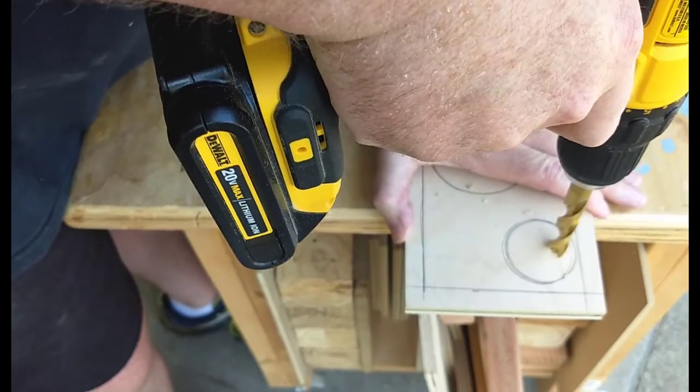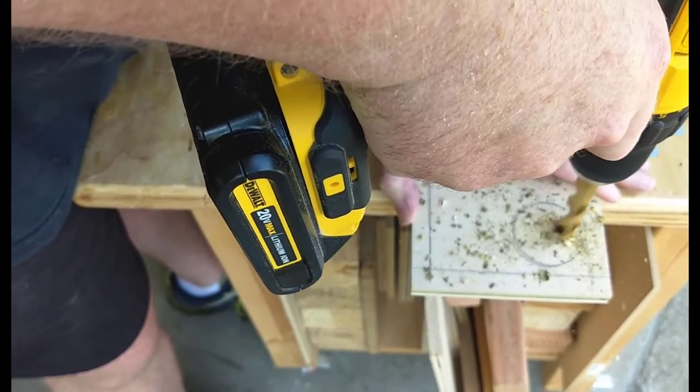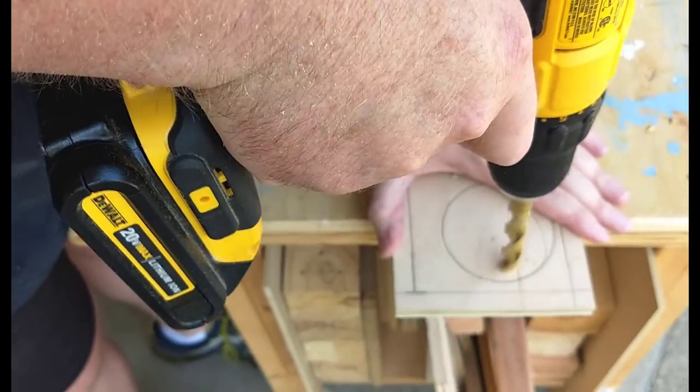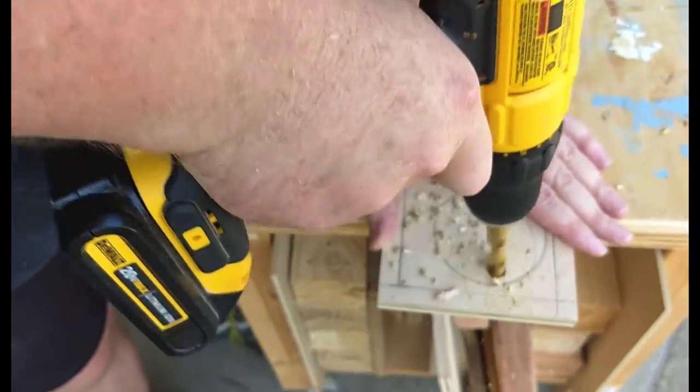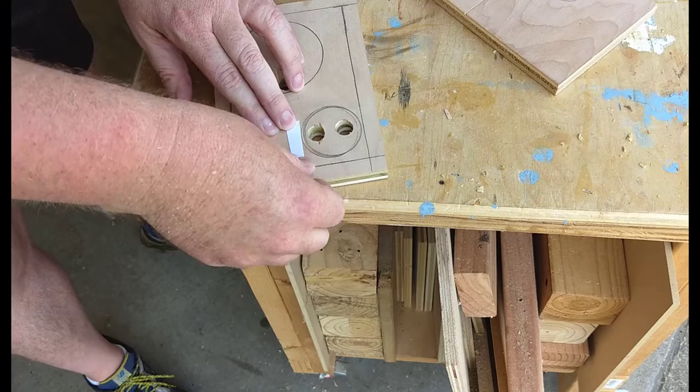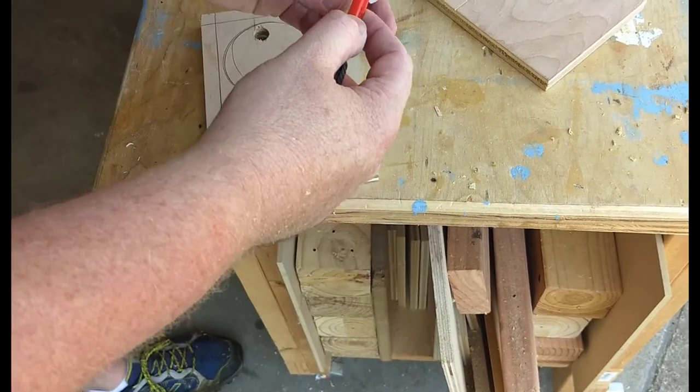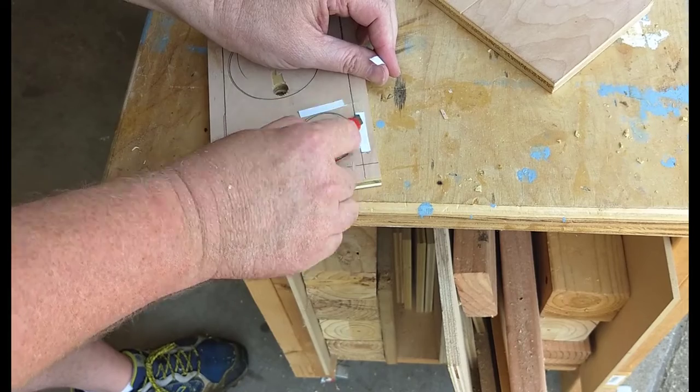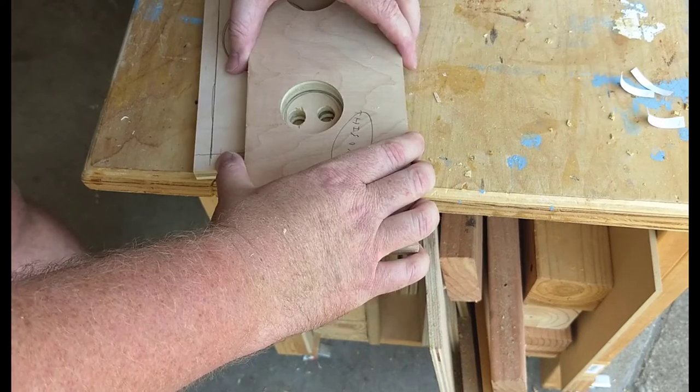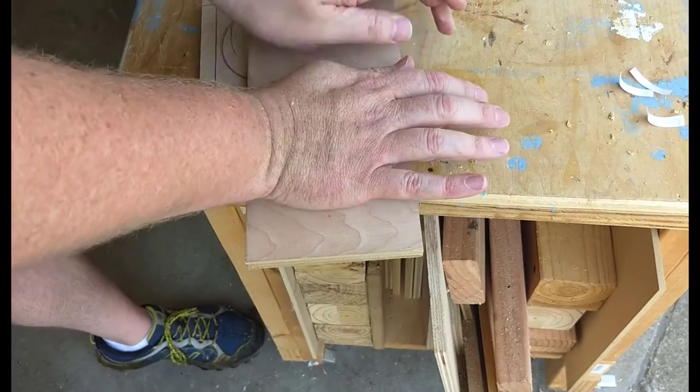Now I need to pre-drill the template so I can insert a router bit later. I stick my templates together using double-sided carpet tape. Now you can go out and buy template tape that's designed just for this, but I've found that double-sided carpet tape does the trick just fine.